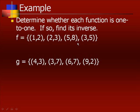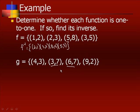Determine whether each function is one to one; if so, find its inverse. For the first set, all x values are different and all y values are different — therefore it is one to one, and the inverse f⁻¹ is found by swapping each ordered pair: (2,1), (3,2), (8,5), and (5,3). For function g, the answer is no — the y value 3 has two x values of 3 and 6, so g is not one to one.